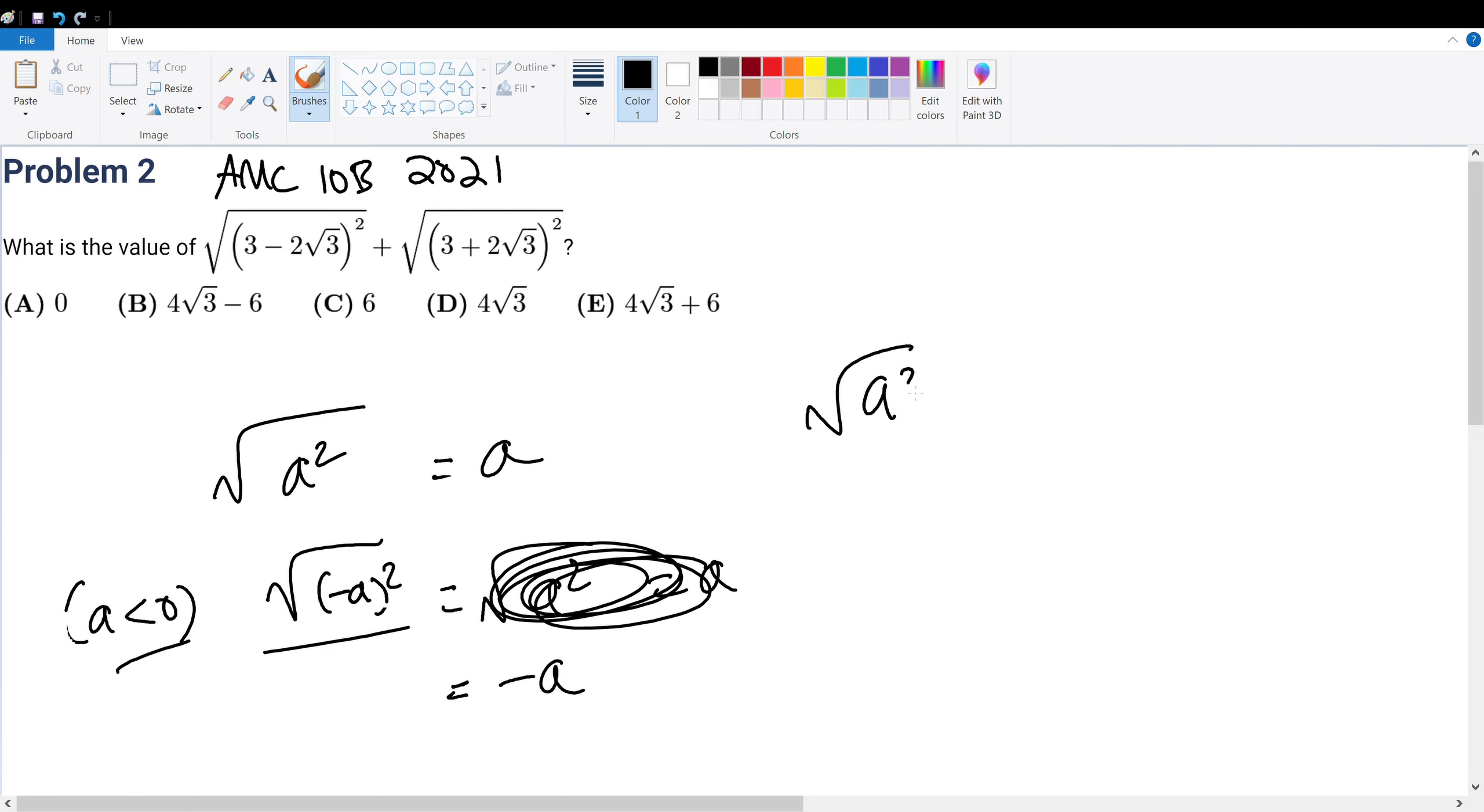We know that square root of a squared can either equal positive a or negative a, but this is only the case when a is less than zero, when a itself is less than zero.